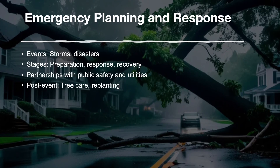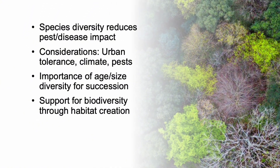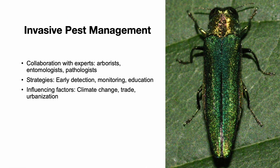Storms and disasters can severely impact urban forests. Urban foresters must plan, coordinate across departments, and respond quickly. Recovery efforts focus on treating damaged trees and replanting. Diversity in species, age, and size improves urban forest resilience, while planting too many of one species can increase vulnerability to pests. Mature trees provide high benefits while younger trees support succession. Invasive species threaten urban forests, and urban foresters must work with specialists to detect, monitor, and manage pests. Public education and early warning systems are essential, as climate change and trade increase these risks.